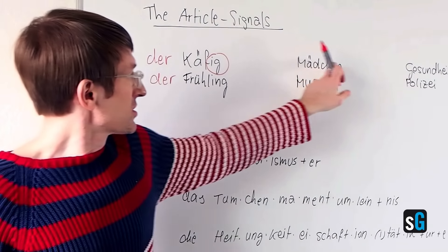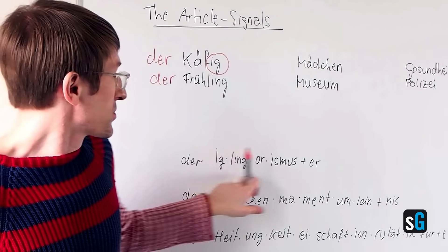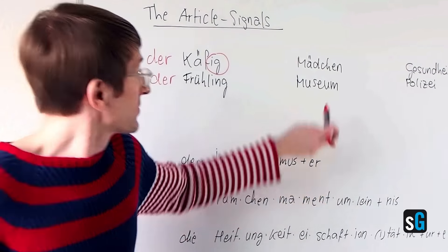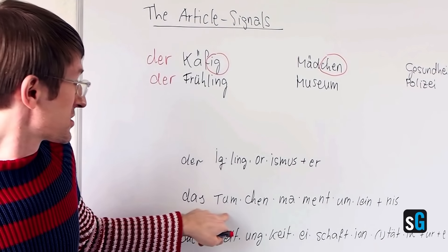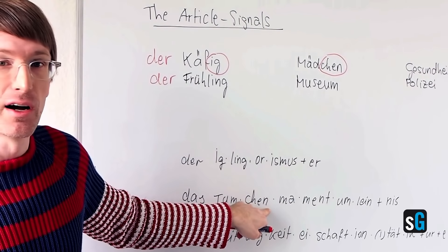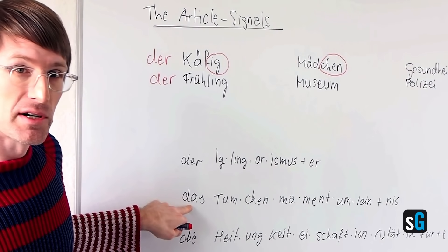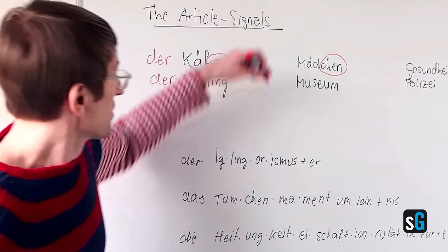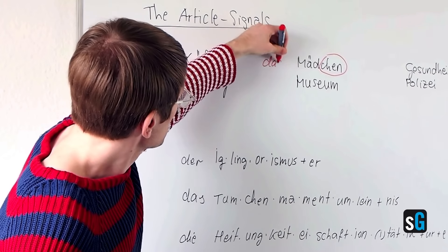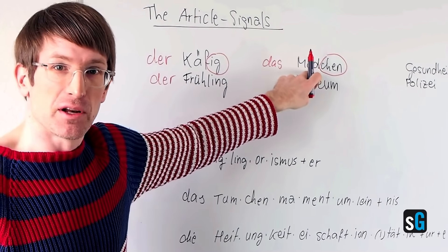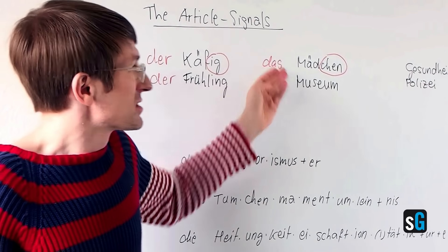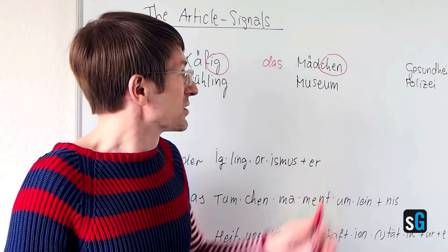So if we continue like this — MÄDCHEN. We won't find CHEN here, but maybe here. I see TUM-CHEN, okay, and this requires the article DAS. So it's DAS MÄDCHEN. Although MÄDCHEN means GIRL, obviously being feminine — a woman later on — the grammar doesn't care about this that much, at least in this case. So it's DAS MÄDCHEN because of the signal.